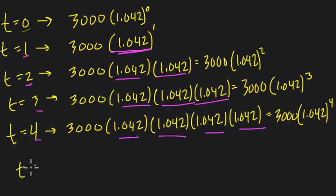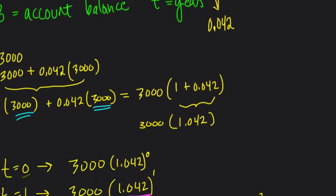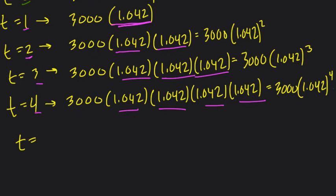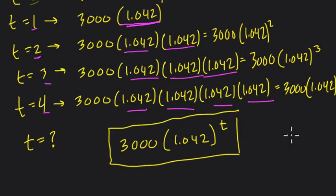So in general, if we're looking at T years, if t is a variable for the number of years we have, if t is anything, what's going to happen? Well, we have 3,000 times 1.042 to the t years. Like if t is any variable, t is our variable. That just goes here. When t is 4, 4 goes here. When t is 3, 3 goes here and so forth. And this is our exponential formula. And don't forget, this equals b. You want to write the equation.